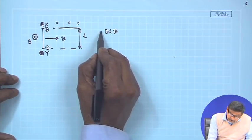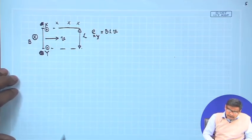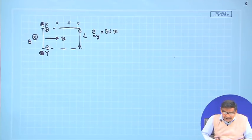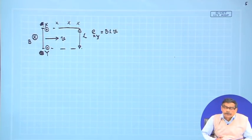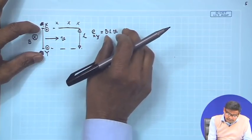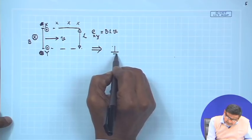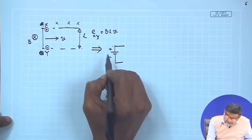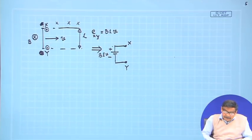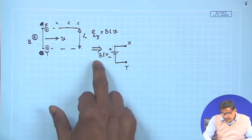This voltage BLV is actually the potential of X with respect to Y. It is always a good habit to write the potential difference between two points — the voltage at X with respect to what is very important. So the potential of X with respect to Y gives some number, and this is equivalent to a battery with plus and minus, where the value of the voltage is BLV. This point is X, this point is Y. If velocity is constant and B is constant, it will be a constant DC voltage.